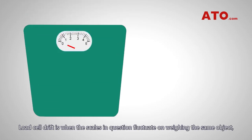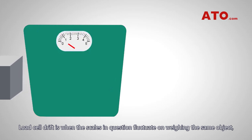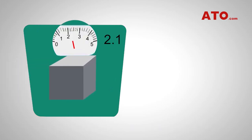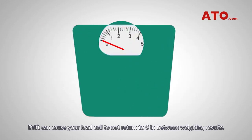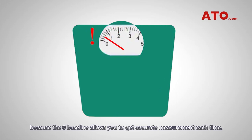What is load cell drift? Load cell drift is when the scales in question fluctuate when weighing the same object, leading to inconsistent results. Load cell drift can prove to be a potential setback for measuring. Drift can cause your load cell to not return to zero in between weighing results. That is a concern because the zero baseline allows you to get an accurate measurement each time.